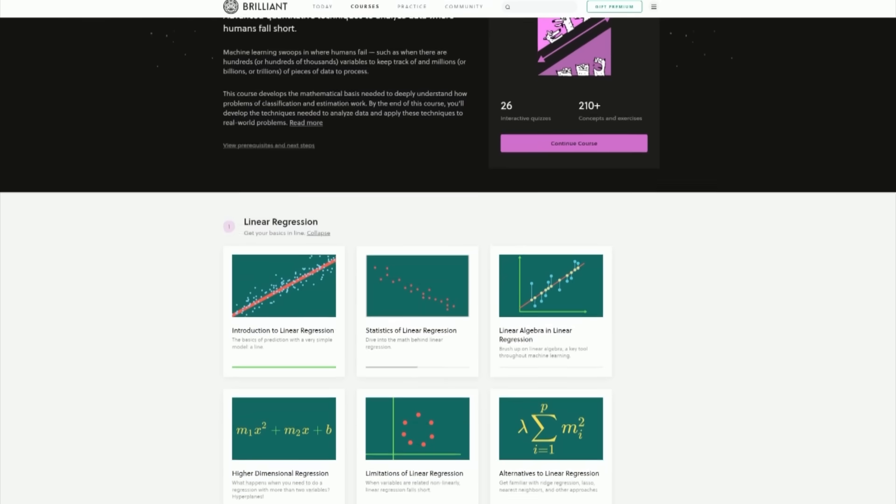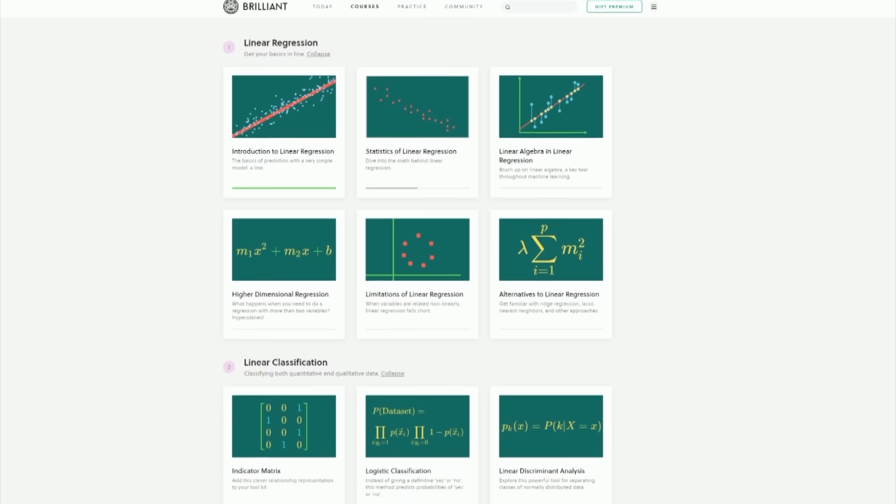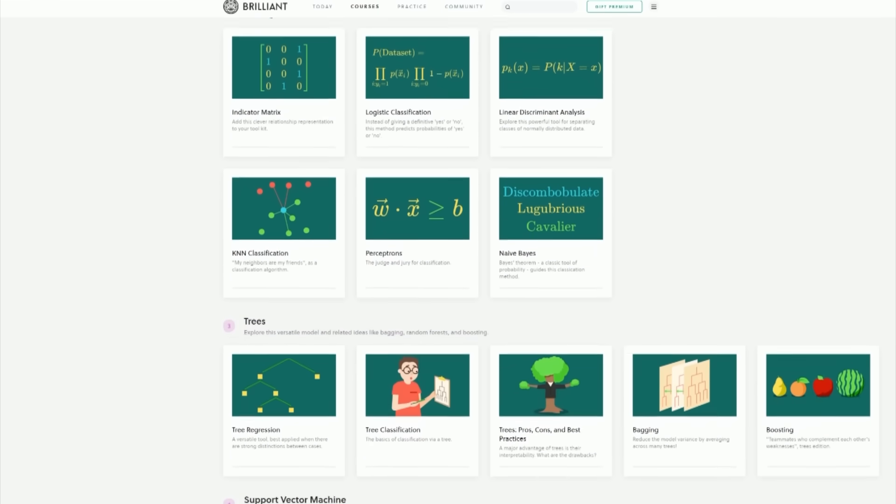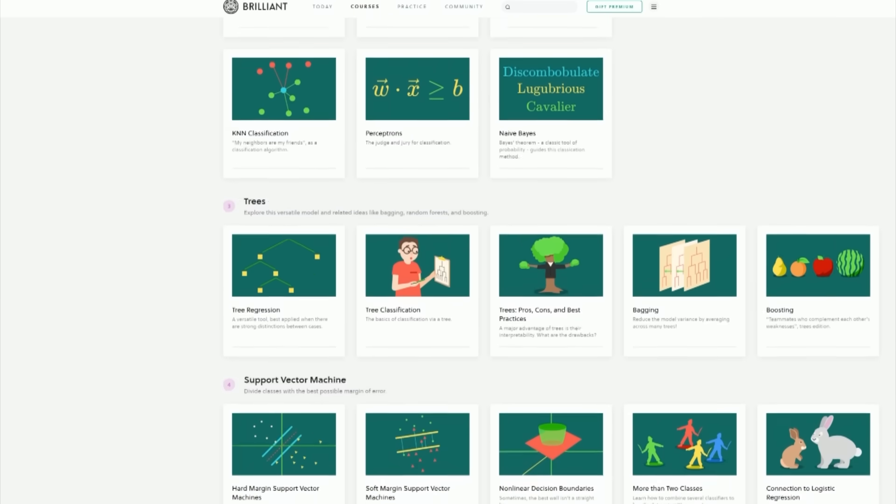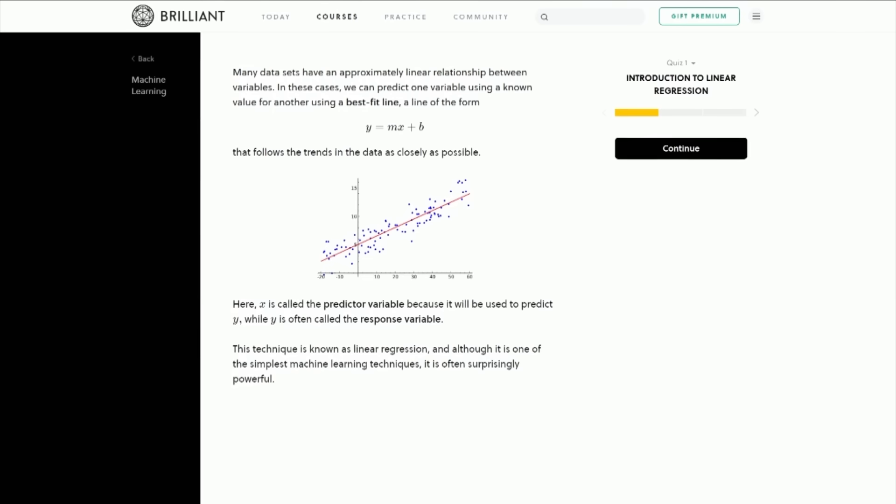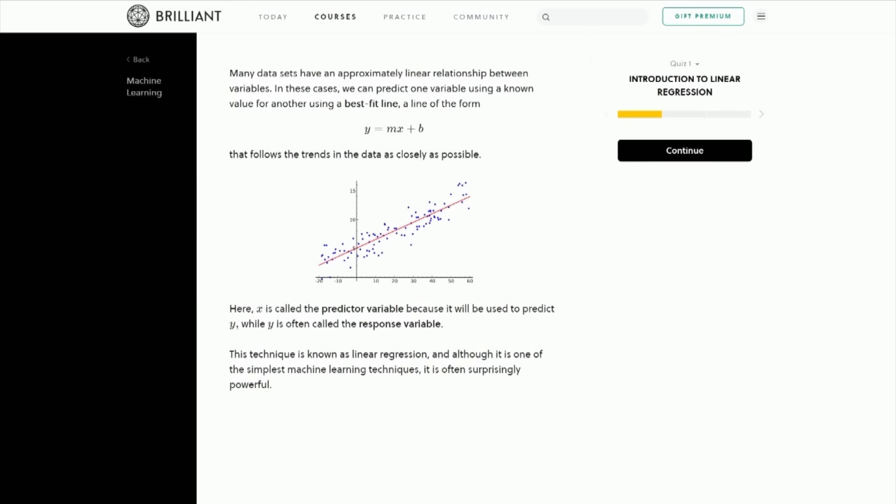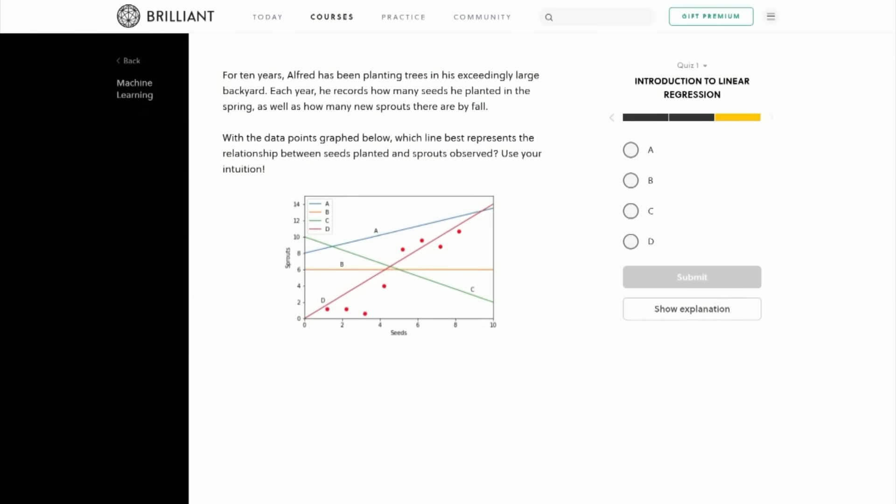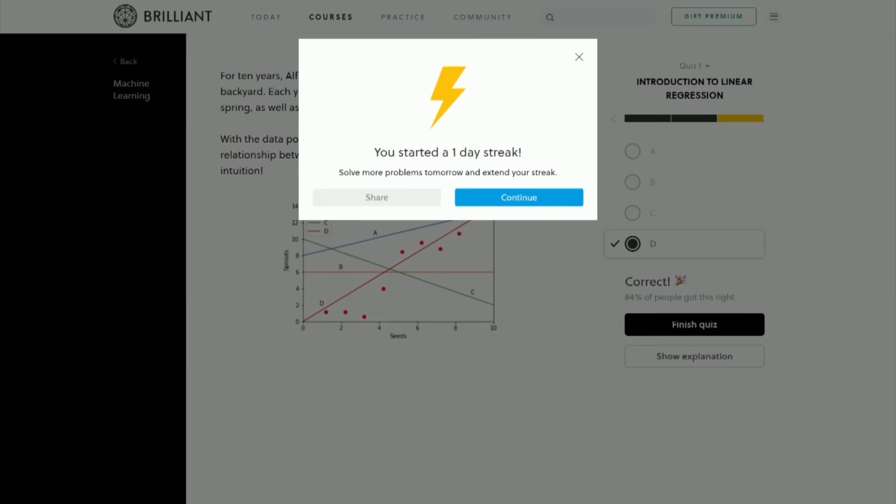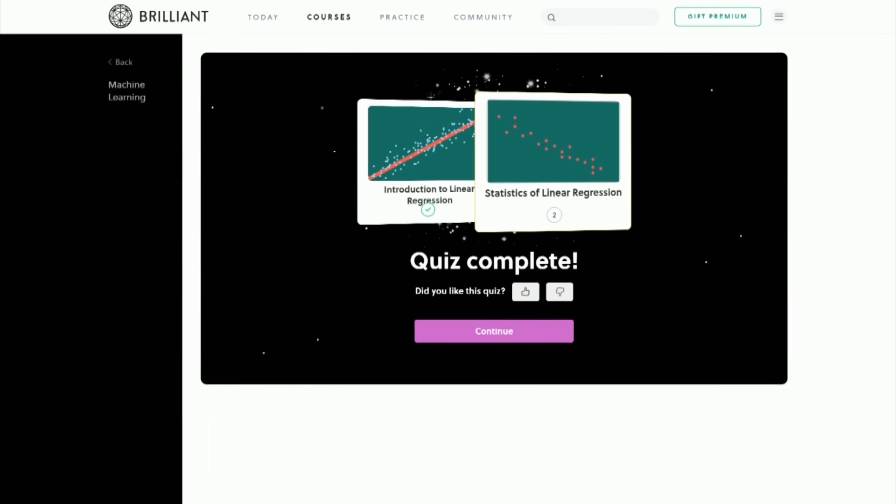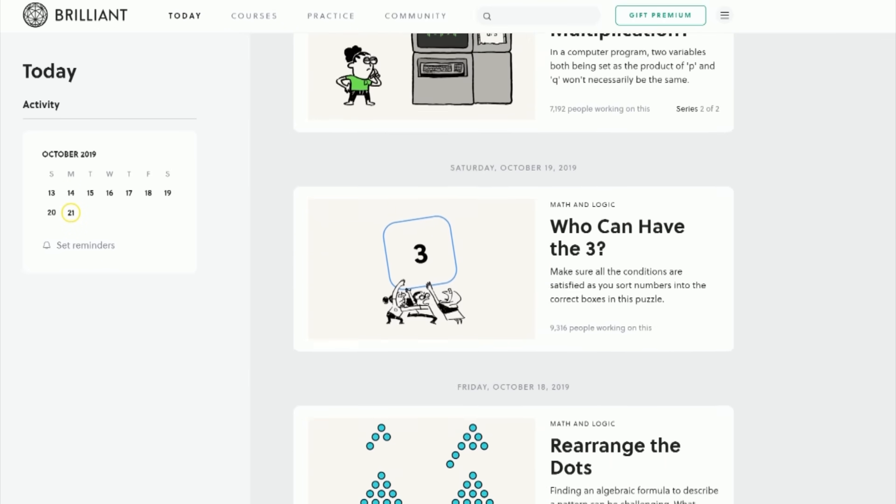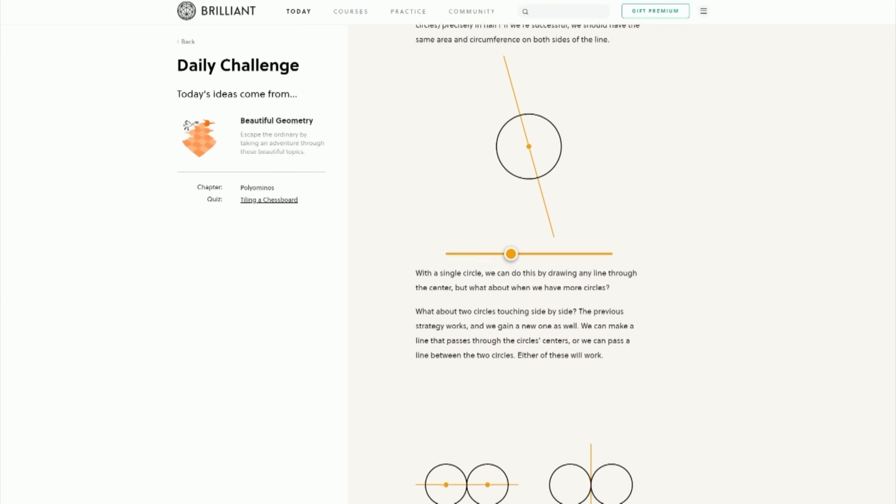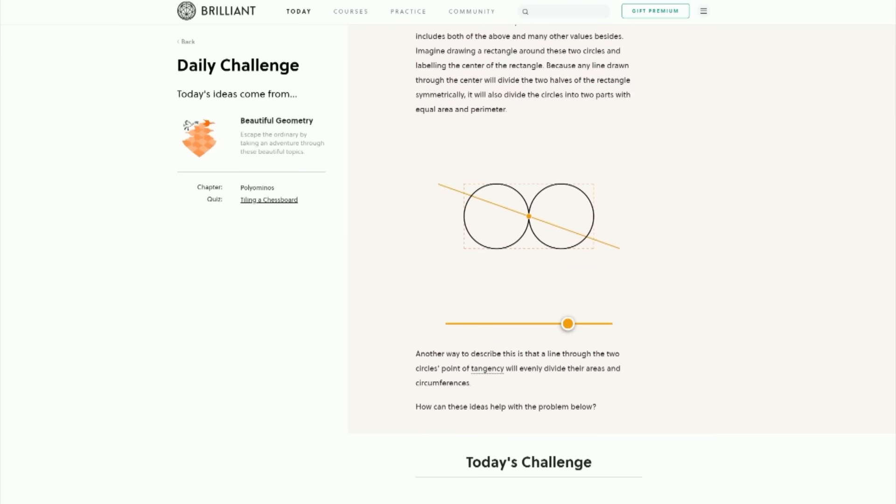So perhaps this could be a career path for you and you could start working towards it right now by taking this course on Machine Learning on Brilliant. This course will help you develop the mathematical skills needed to deeply understand how problems of classification and estimation work. And by the end of it you will develop the techniques needed to take complex multivariable datasets and create machine learning algorithms to analyse them. Or you could complete one of Brilliant's daily challenges. Each day Brilliant presents you with interesting scientific and mathematical problems to test your brain. Each daily challenge provides you with the context and framework that you need to tackle it, allowing you to learn the concepts by applying them.